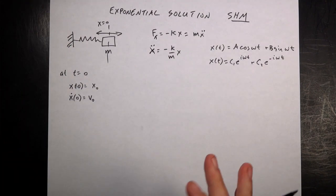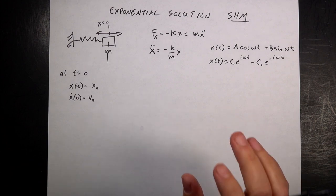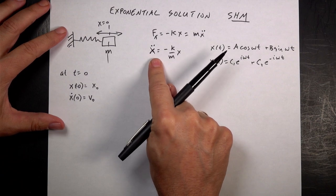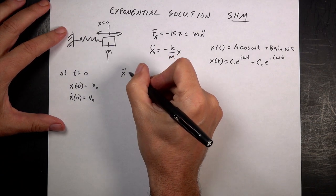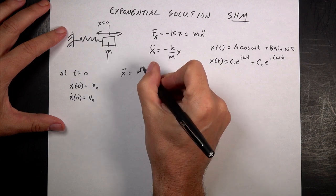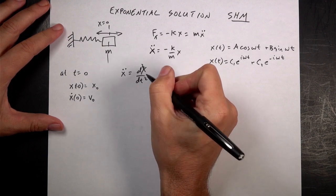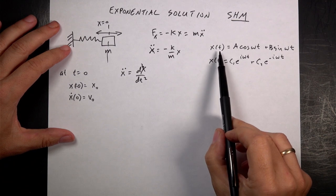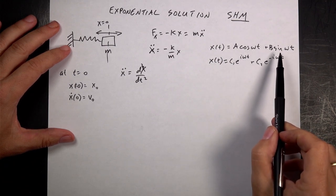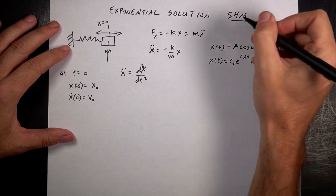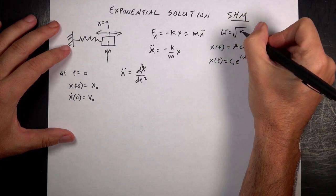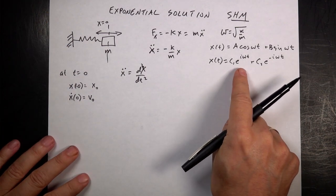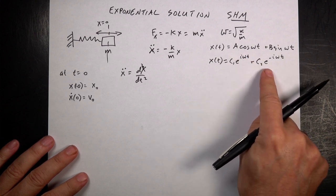I have a whole video on solving this differential equation in multiple ways, but I just want to show two solutions to this differential equation. X-double-dot is the notation we use for the second derivative of x with respect to t, and x-dot is the first derivative. The two solutions are: first, a linear combination of cosine and sine — A cosine(ωt) + B sin(ωt) — where ω is the square root of k over m. The second is the exponential version: c1·e^(iωt) + c2·e^(−iωt).